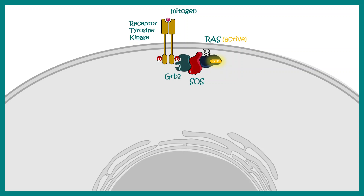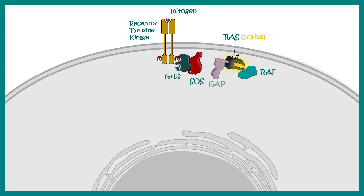RAS, once activated, can dissociate and move in the membrane to interact with other kinases such as RAF. RAF gets activated upon interaction with RAS.